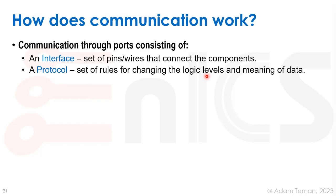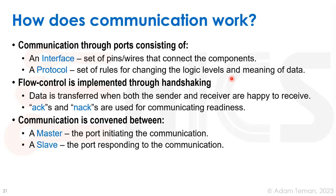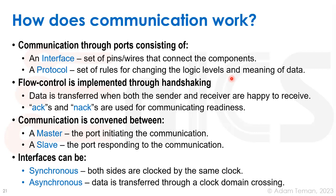Flow control is implemented through what we call handshaking, so you transfer data only when both the sender and the receiver are ready. We use ACKs and NACKs — acknowledge or not acknowledge — to indicate readiness. Communication is between a master and a slave, and interfaces can be synchronous, using a common clock, or asynchronous, using clock domain crossing or handshaking to ensure data is ready.